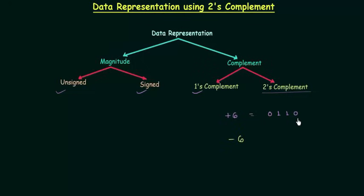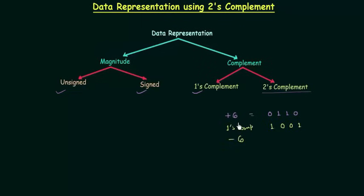For two's complement, first we have to take the ones complement. So the ones complement of 0, 1, 1, 0 is simply the complement of these 4 bits, and we have 1, 0, 0, 1. And now we will add 1 to it to obtain the two's complement.